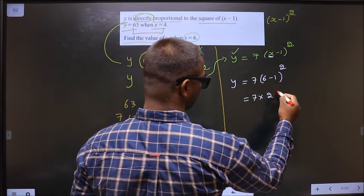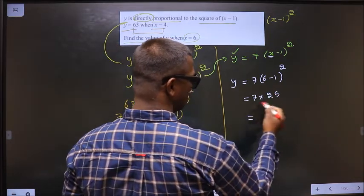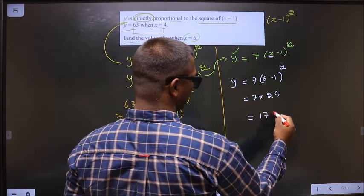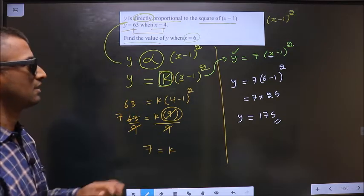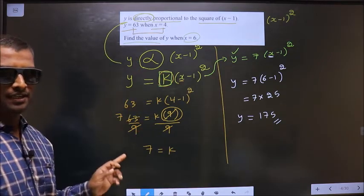So this is 7 into 6 minus 1 is 5. 5 squared is 25. 7 into 25 is 175. This is the value of y, our answer.